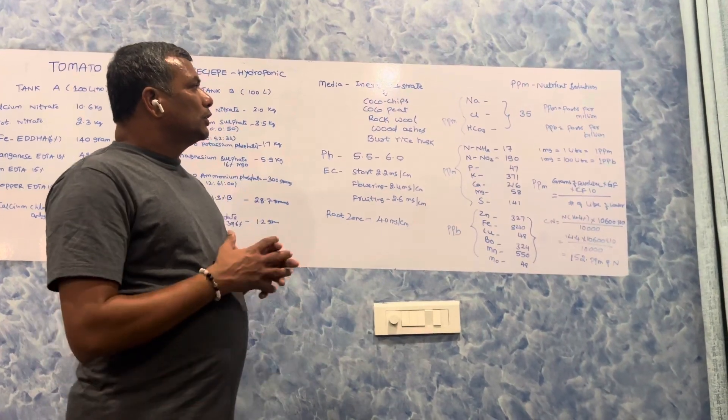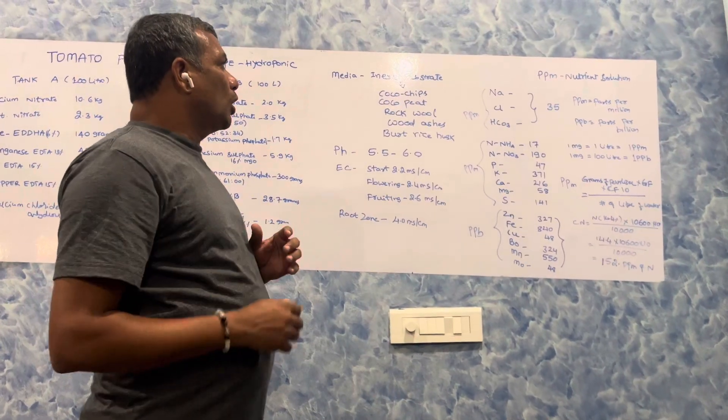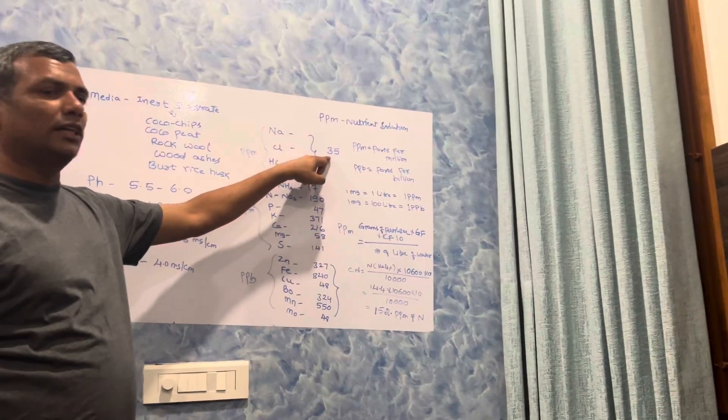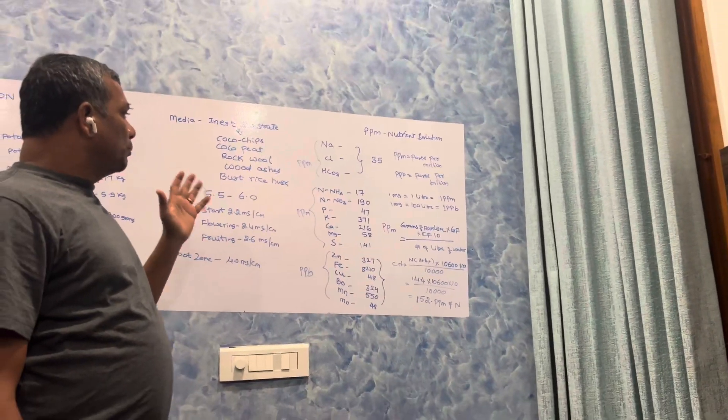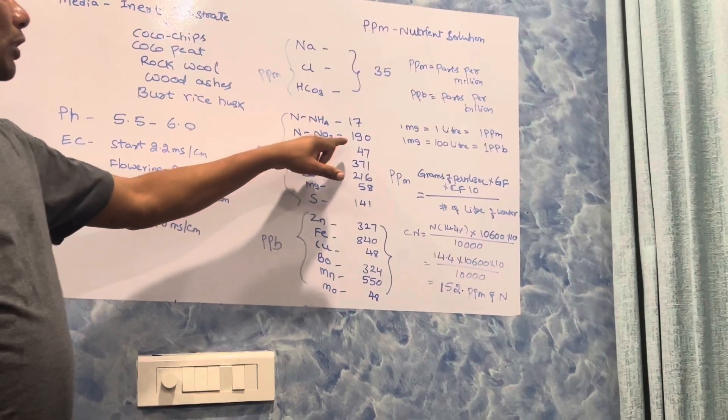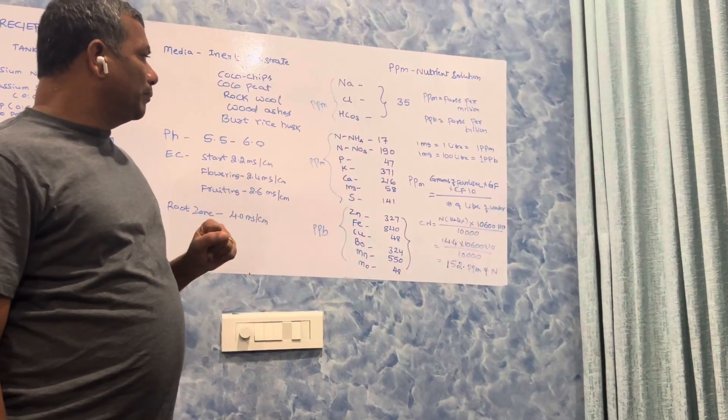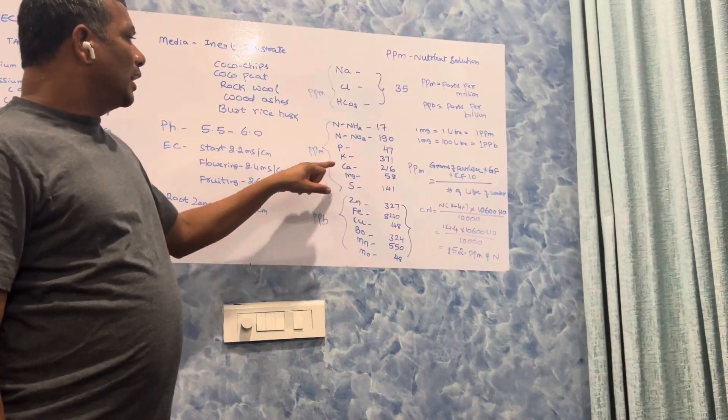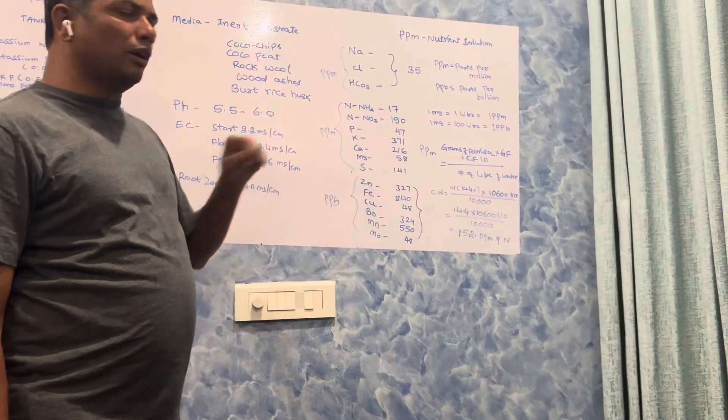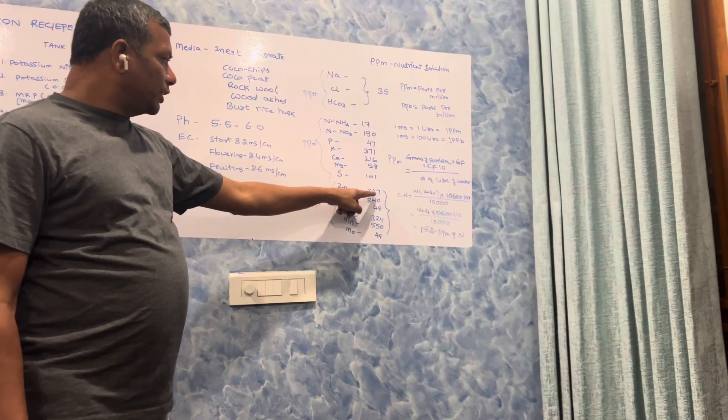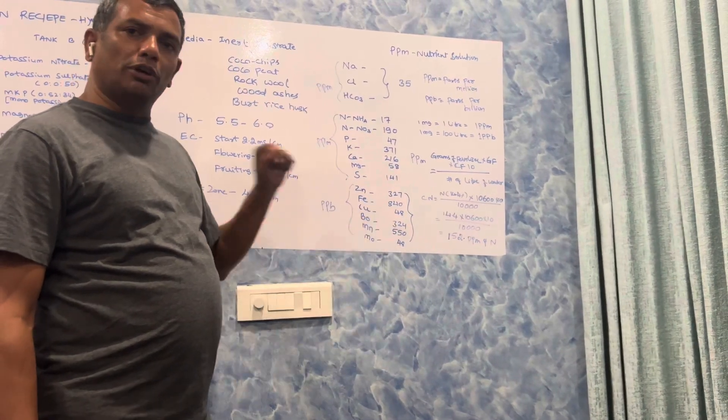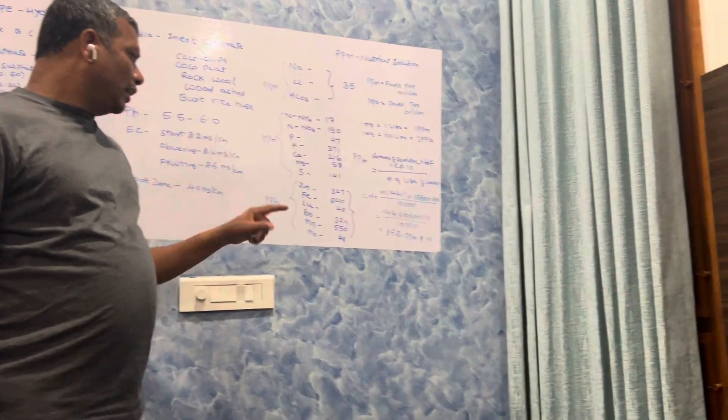Now when it comes to the PPM solution: sodium chloride and bicarbonates should be less than 35 PPM in the nutrient solution. What should be our target PPM? Ammoniacal nitrogen 17 PPM, nitrate nitrogen 190 PPM, phosphorus 47 PPM, potassium 371 PPM, calcium 216 PPM, magnesium 58 PPM, sulfur 141 PPM, zinc 327 PPB, iron 840 PPB, copper 48 PPB, boron 324 PPB, manganese 550 PPB, and molybdenum 48 PPB.